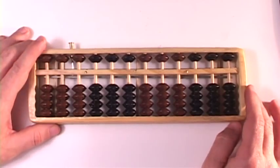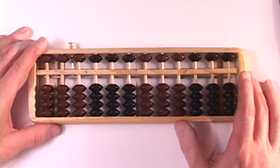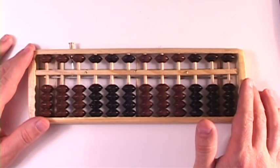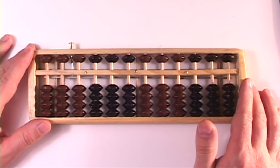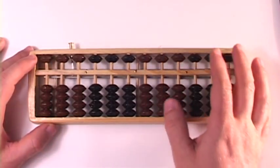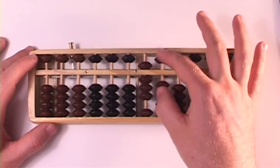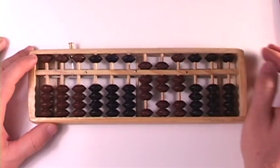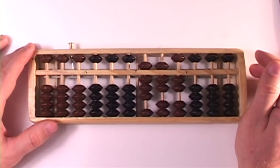We're going to do the 100's column nonetheless to give you just a little bit more practice. Let's do 872 minus 216. Set the number 872 on your Abacus. There's an 8, there's a 7, and there's a 2.